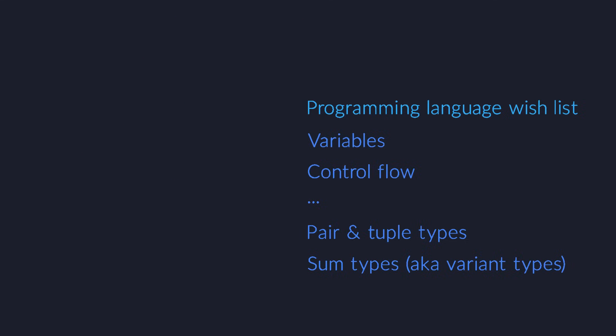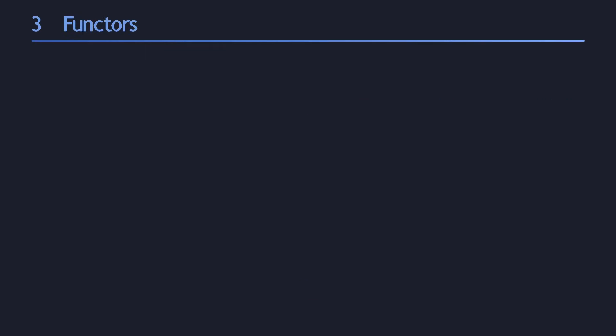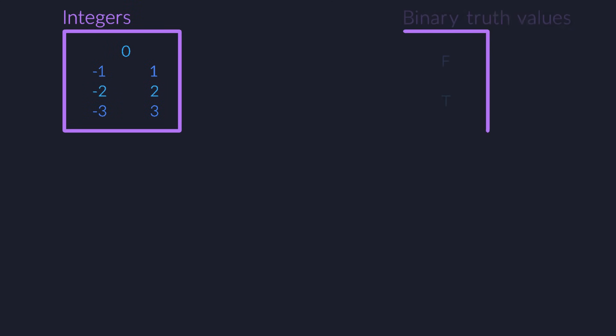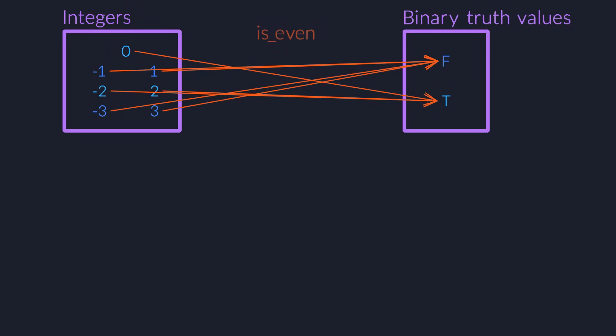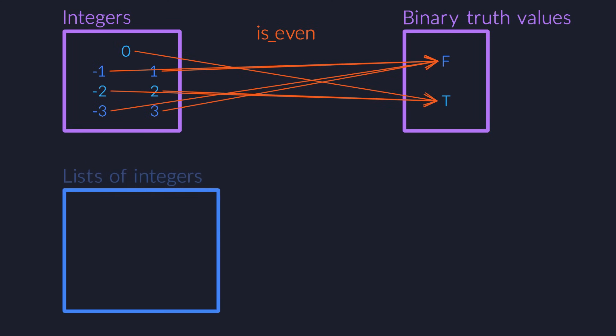Okay, we are now going to move to the next level of category theory — quite literally. In your favorite programming language you want to have not only integers but also lists of integers. So we're going to invent the concept of lists and see how we can best model it. The type 'list of integers' contains an empty list, lists with only a single element, lists of two elements, and even infinitely many lists with infinitely many elements.